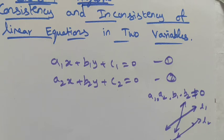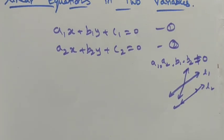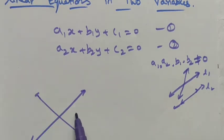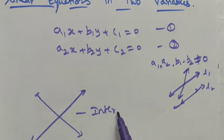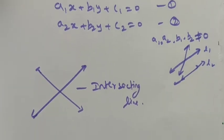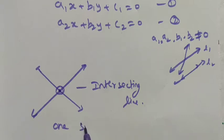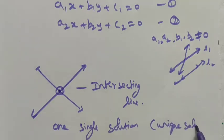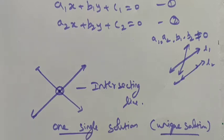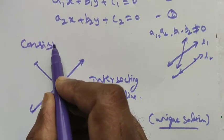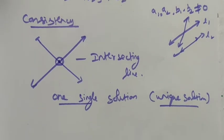Consistency means: if the two lines are intersecting, we clearly get only one solution — a unique solution. This is called consistency. So intersecting lines give us one single unique solution.